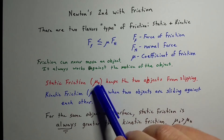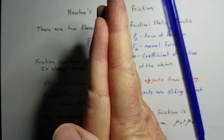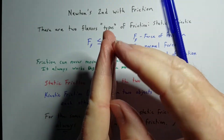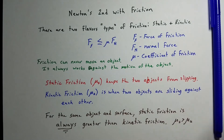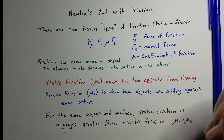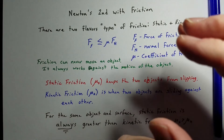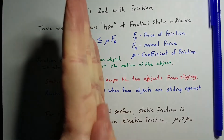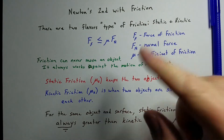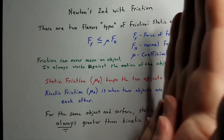Mu sometimes has a subscript S for static friction. Static friction means the two objects are stuck together and not sliding against each other — like a ball rolling, or a block on an incline that should slide down but doesn't, held in place by static friction. Kinetic friction is when the two objects are rubbing and sliding against each other, like spinning wheels in place.